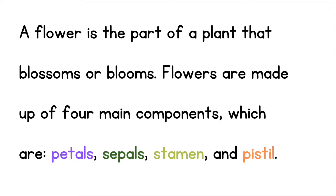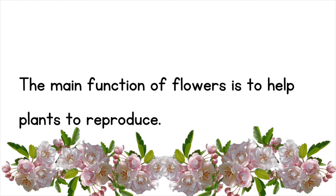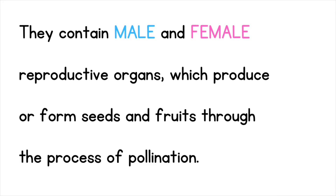A flower is the part of a plant that blossoms or blooms. Flowers are made up of four main components, which are petals, sepals, stamen, and pistil. The main function of flowers is to help plants to reproduce. They contain male and female reproductive organs, which produce or form seeds and fruits through the process of pollination.